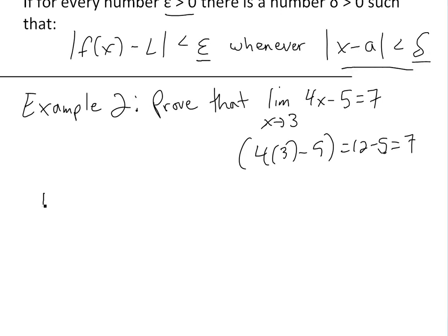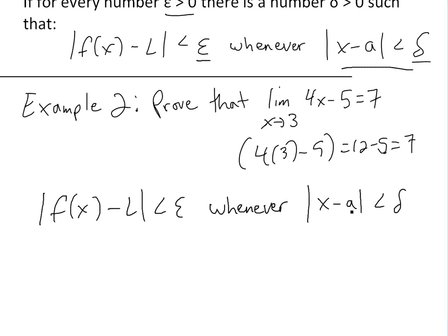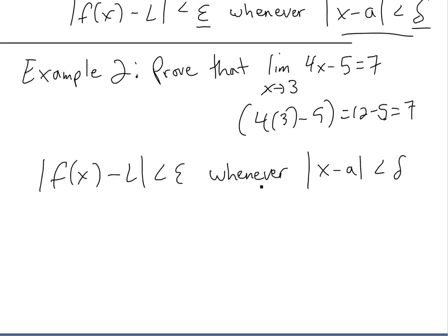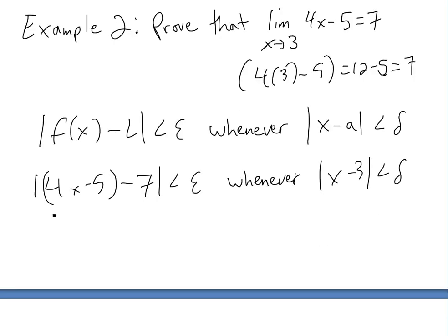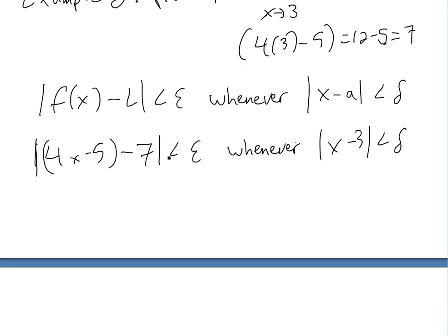So basically, we write this down: the absolute value of f(x) minus the limit, whenever x minus a is less than delta. In this case, f(x) is going to be 4x minus 5, and then we're subtracting the limit, which is seven. This is going to be less than epsilon, whenever x minus three is less than delta. The idea of the limit is that regardless of how small epsilon is, even 0.0001, the difference between f(x) and the limit is really small, meaning you're approaching three.